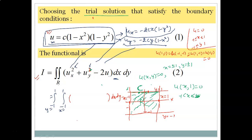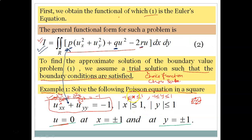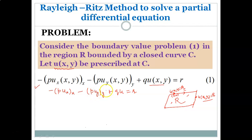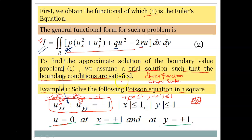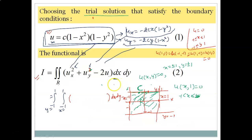Our first task is to form the functional. Comparing this equation with the general boundary value problem, we can see that p = 1, q = 0, and r = −1. Substituting these values into the general functional form, the functional comes out to be: I = ∬_R (u_x² + u_y² − 2u) dx dy, where the region R is the square with x from −1 to 1 and y from −1 to 1.